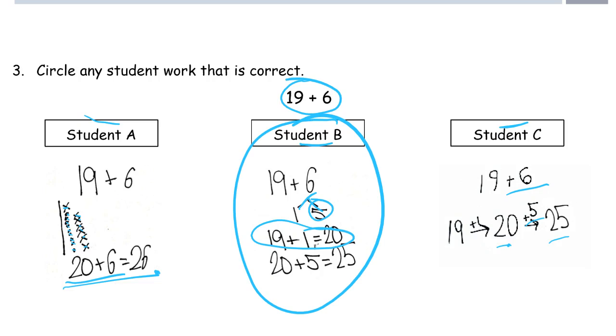But don't try to write this as an equation. The arrow way is great. As long as you keep track of what you added, 1 plus 5 is the same as adding 6 all at once. 25. So that was correct.